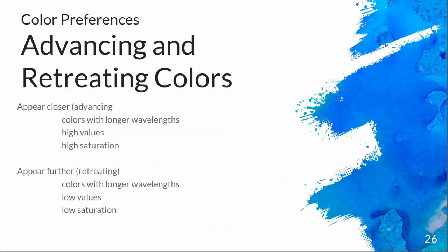Also think about advancing and retreating colors. Colors that appear closer are our warm colors — colors with longer wavelengths, higher values, and higher levels of saturation. Things that look further away are retreating colors — cool colors with shorter wavelengths, lower values, lower saturation. If you've ever seen photos where everything's grayscale except one colored object, that part with color pulls you closer. Often it's something like a yellow umbrella or red apple — it feels like it's right there in front of you.